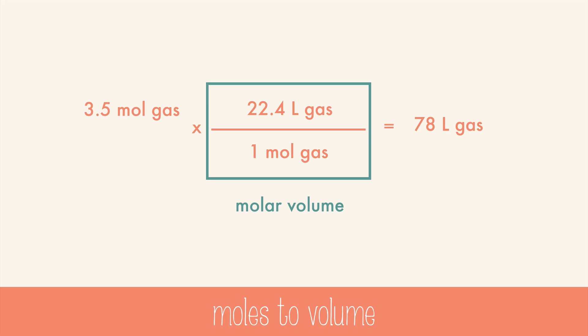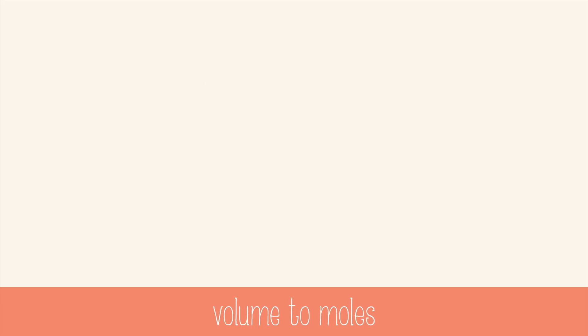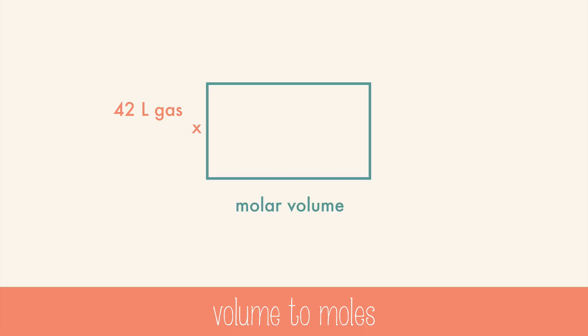Again, it doesn't matter which gas it is, so long as it's at STP. If you have 42 liters of a gas at STP, use molar volume again to convert to moles, but this time liters go on the bottom. When you do the math, you get 1.9 moles of a gas.